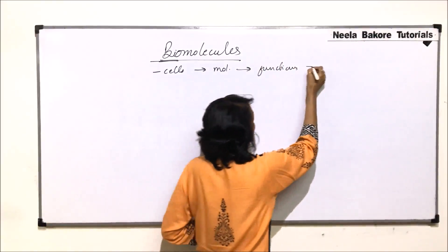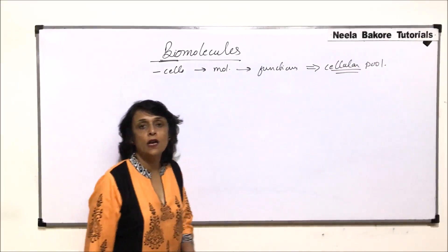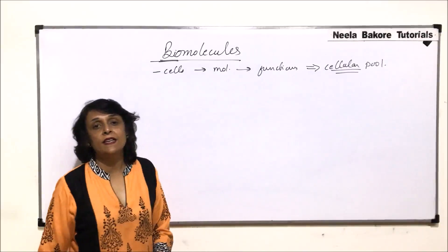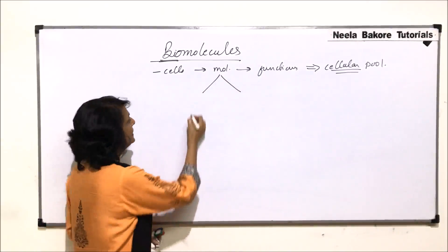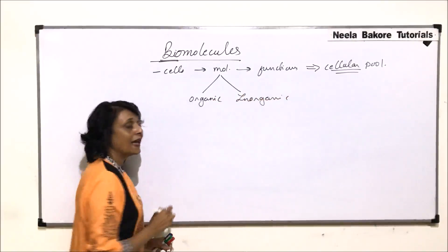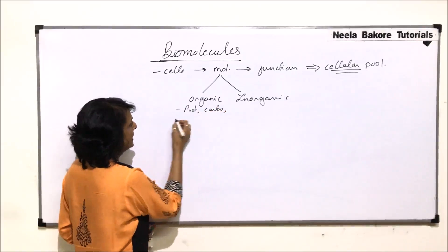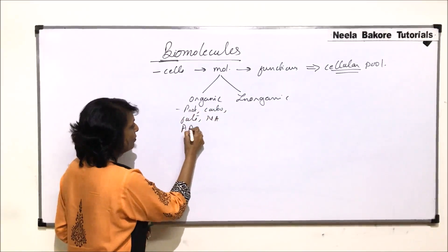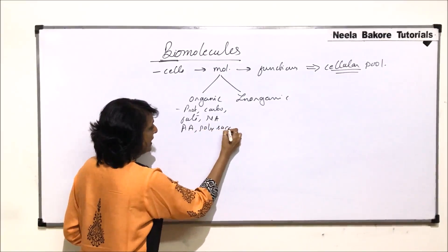All these molecules present in a cell are together known as the cellular pool. So when we use the word cellular pool, we are talking about all biomolecules present in the cell that are essential for its various functions. These molecules can be of two categories: organic or inorganic. Organic molecules include proteins, carbohydrates, fats, nucleic acids — that is DNA and RNA — amino acids, and polysaccharides.